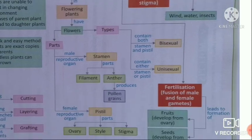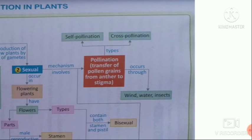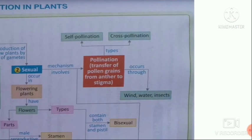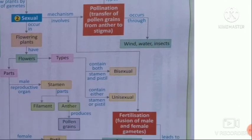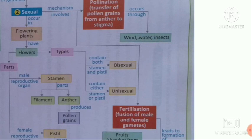Pollen grains are transferred from anther to stigma — this process is called pollination. Pollination is of two types: self-pollination and cross-pollination. In self-pollination, pollen grains are transferred within the same flower. In cross-pollination, pollen grains are transferred from one plant to another plant of the same kind. This pollination — especially cross-pollination — can occur through different agents like wind, water, insects, and animals.